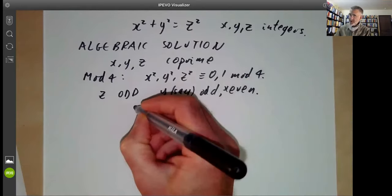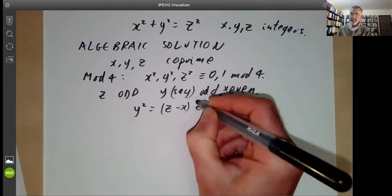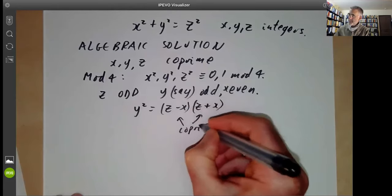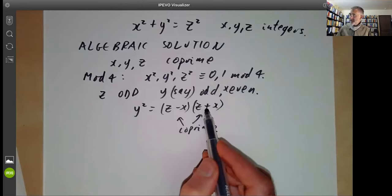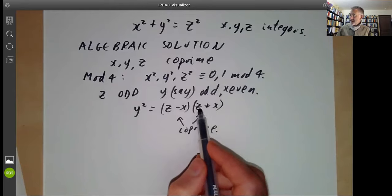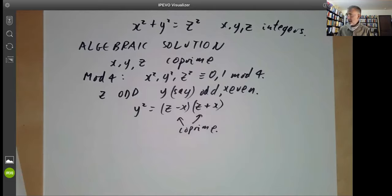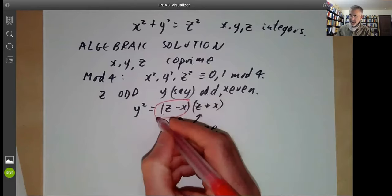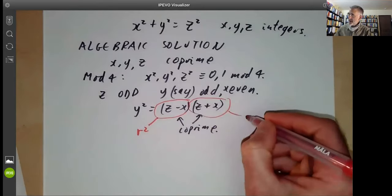Then we can rearrange the equation as y squared equals (z minus x) times (z plus x). We notice that these two numbers are co-prime. Since x and z are co-prime, the only possible common factors of these two numbers would be 2. But since z is odd and x is even, they can't have a common factor of 2, so they're co-prime. Now, if we've got two numbers that are co-prime whose product is a square, then both numbers must be squares, at least up to sign. So by changing the sign if necessary, we can assume that (z minus x) is a square, say r squared, and (z plus x) is a square, say s squared.